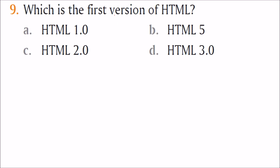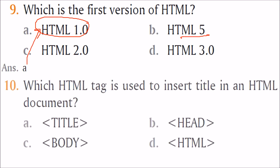Which is the first version of HTML? HTML 1.0 — we are now at HTML 5. The answer is A. Which HTML tag is used to insert a title in an HTML document? The answer is the title tag.